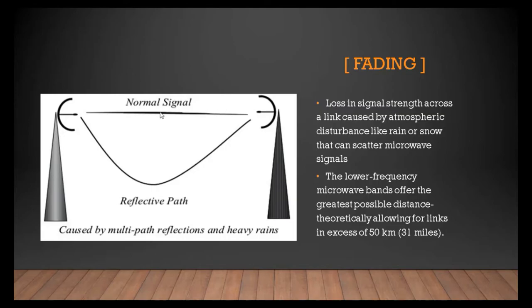This is the normal signal, and if there are any fading issues, the signal starts scattering, so we will get a diffraction path.